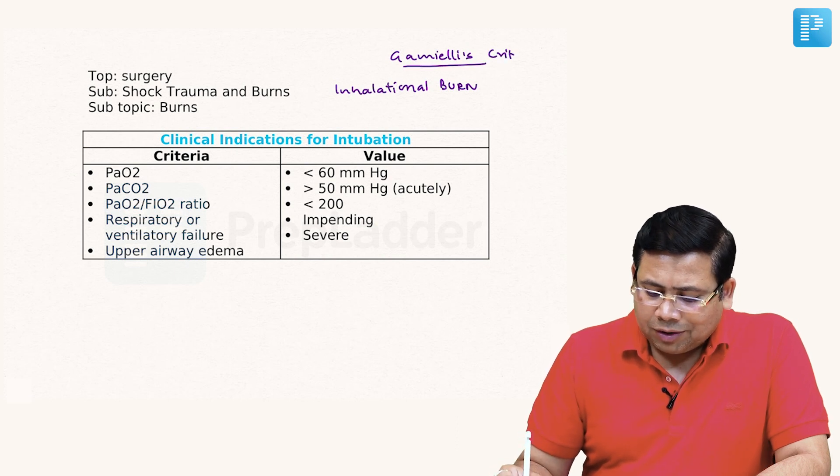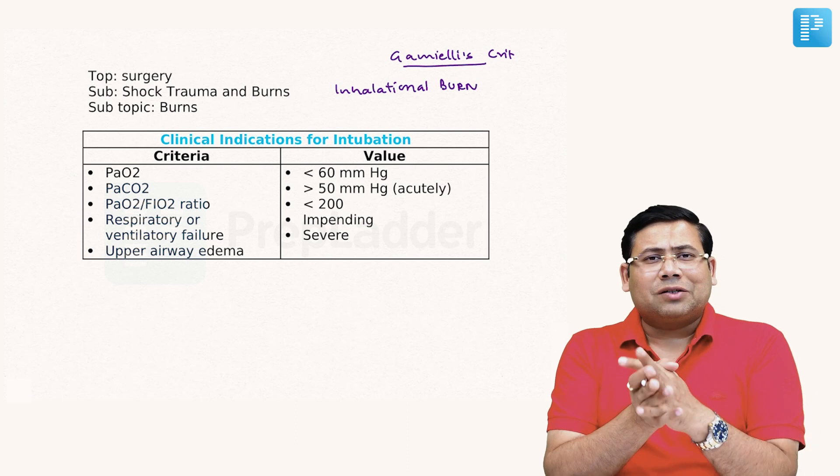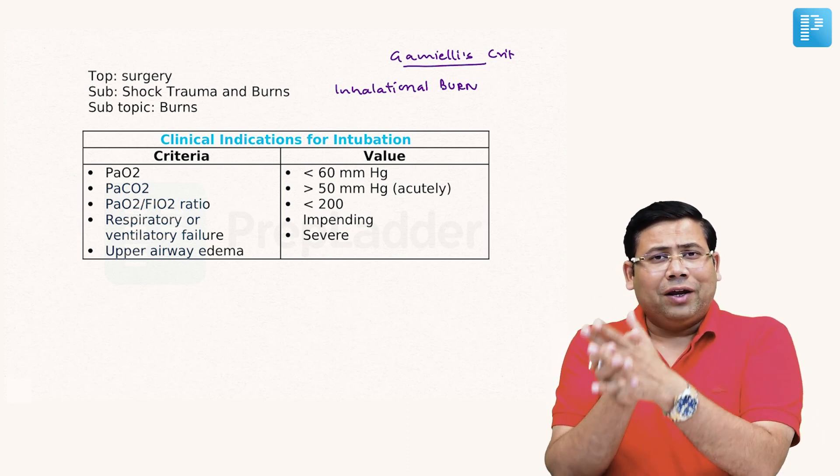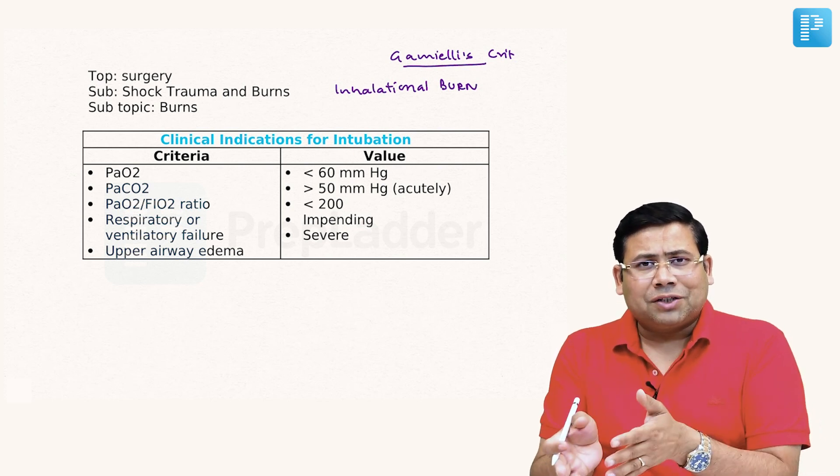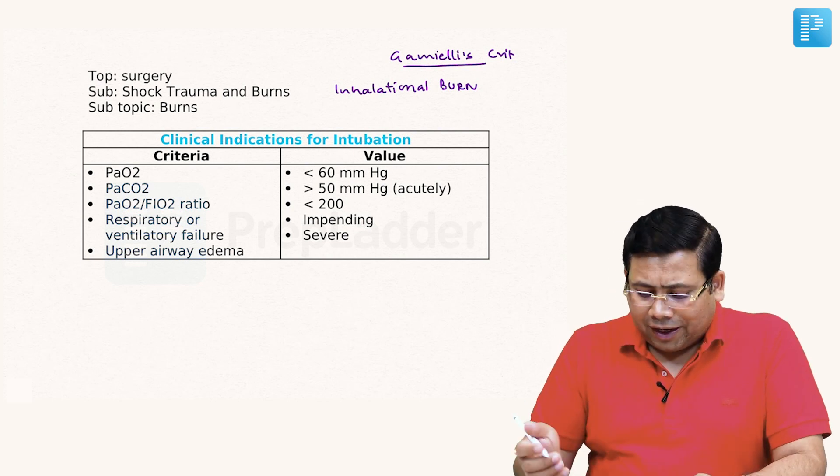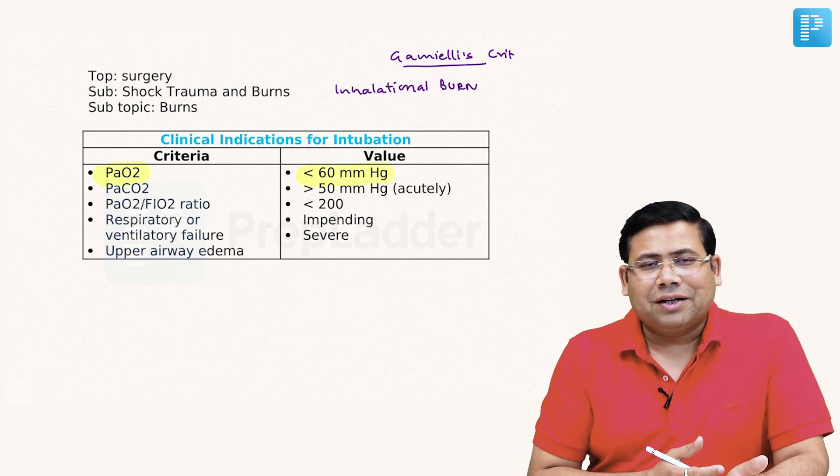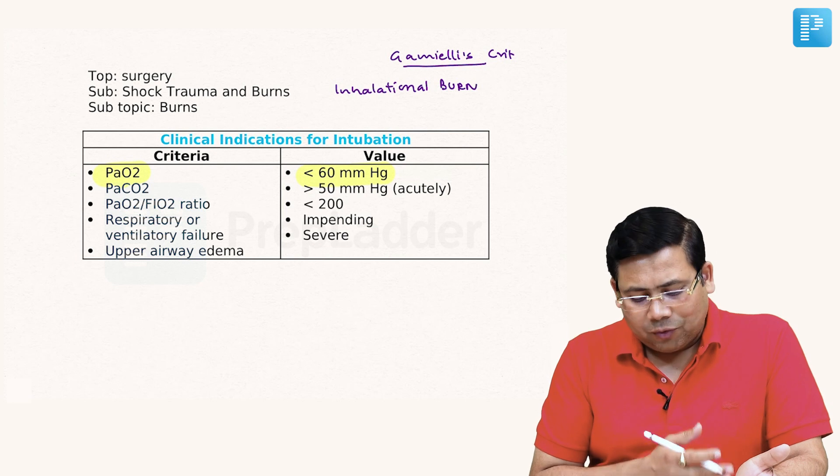Now when we talk about the criteria, it is describing what the indications for intubation are. A failure is an indication. A desaturating patient is. If we talk about PaCO2, if it is less than 60 mmHg, the patient is going into hypoxic attack.